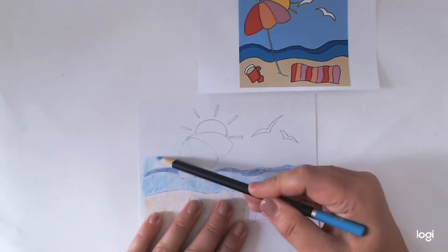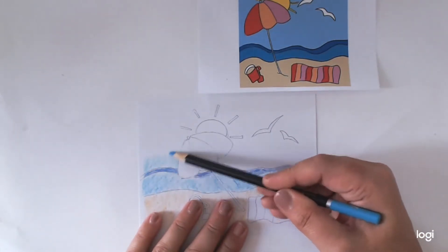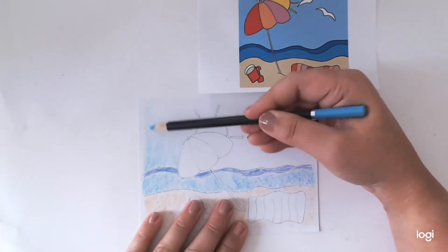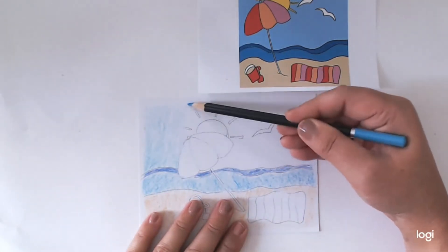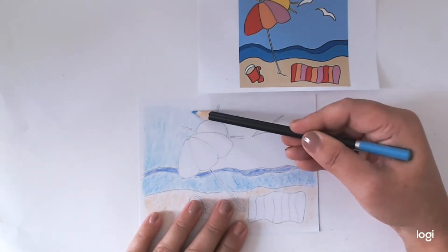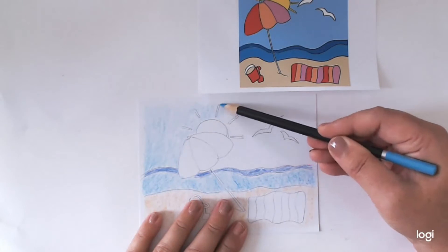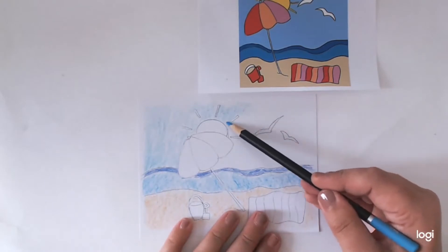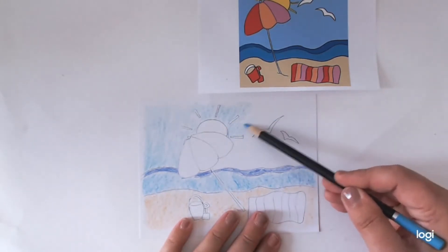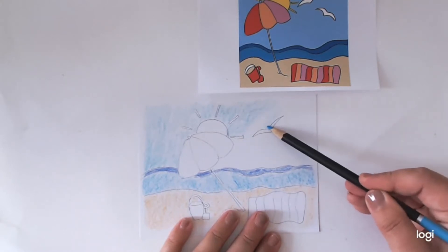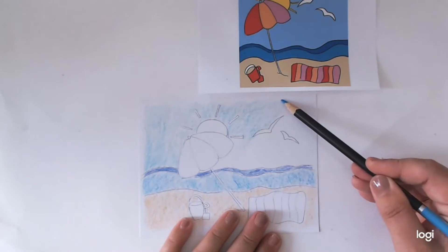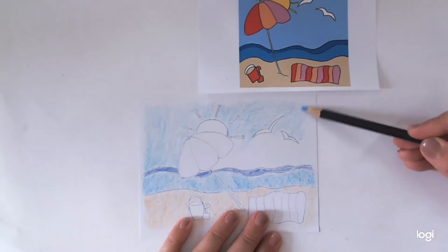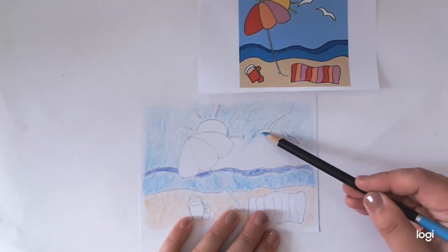Now I'm going to go in and do the sky. So we'd have done all of our background colors. Again, just use what colors you have, any blues you have, any yellows you have. And then just use whatever colors you have for the parasol and the towel and the bucket because it doesn't really matter, does it? If you have any questions, please do ask me in the comments below.